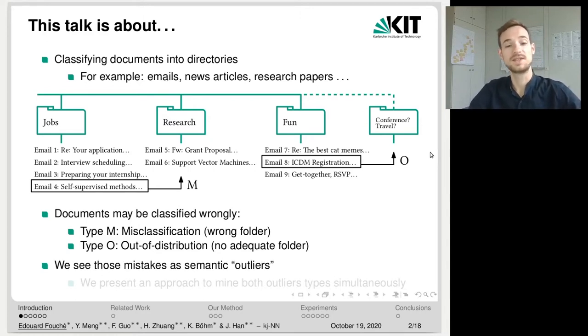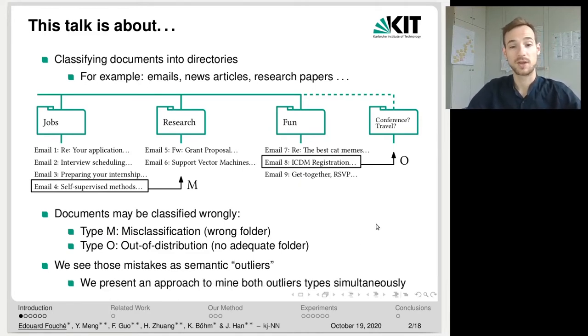And so we see those mistakes as semantic outliers. And in our paper, we present an approach to mine both outlier types simultaneously.